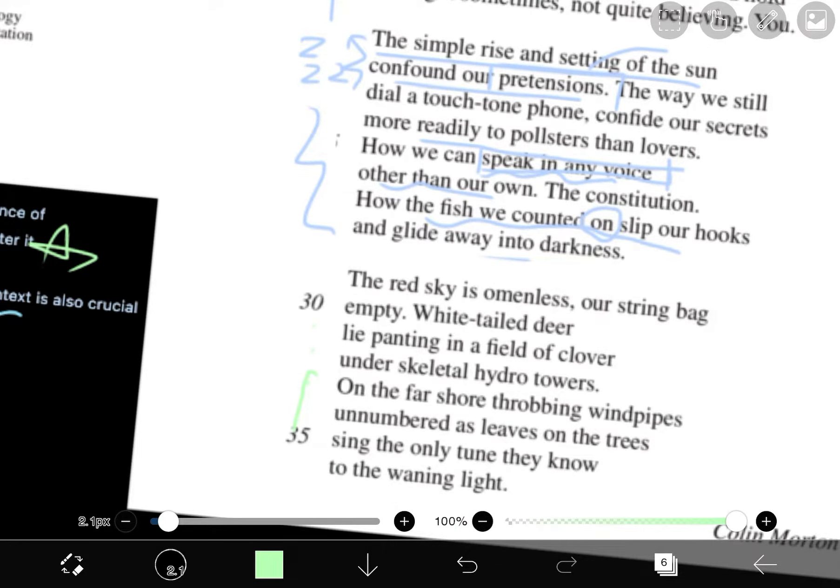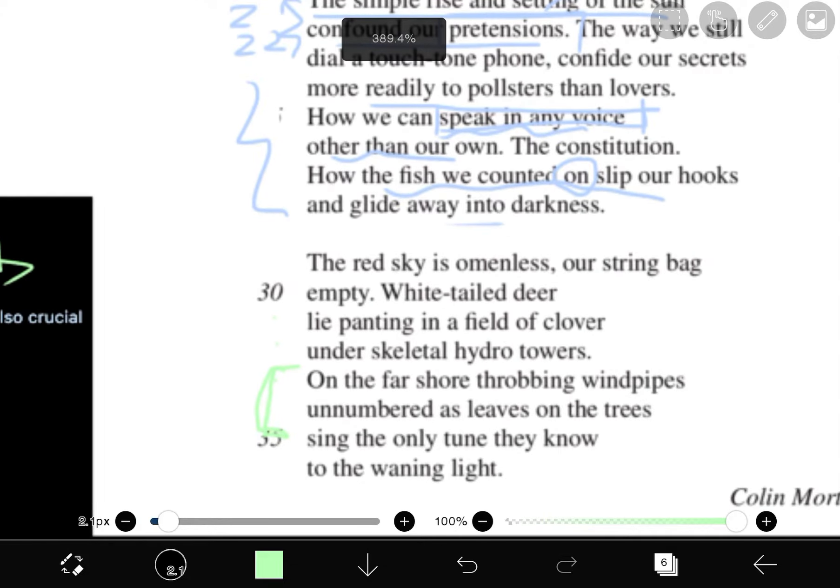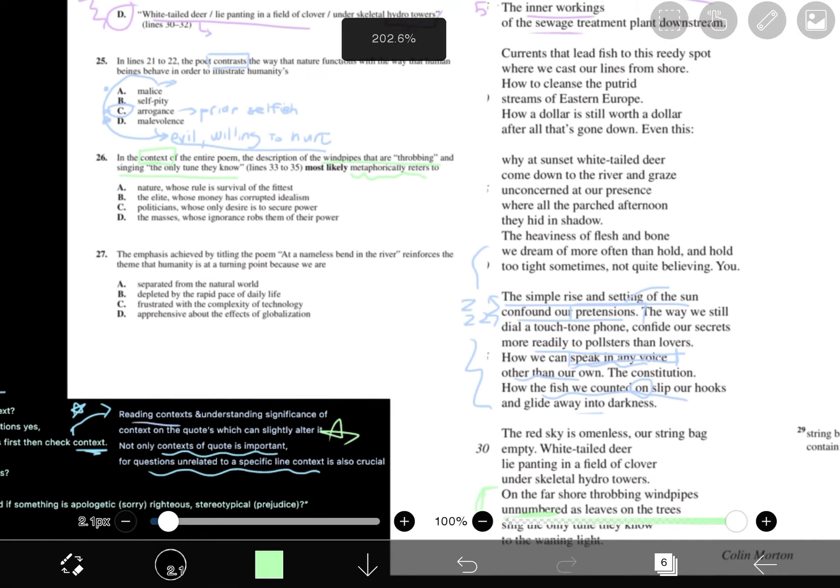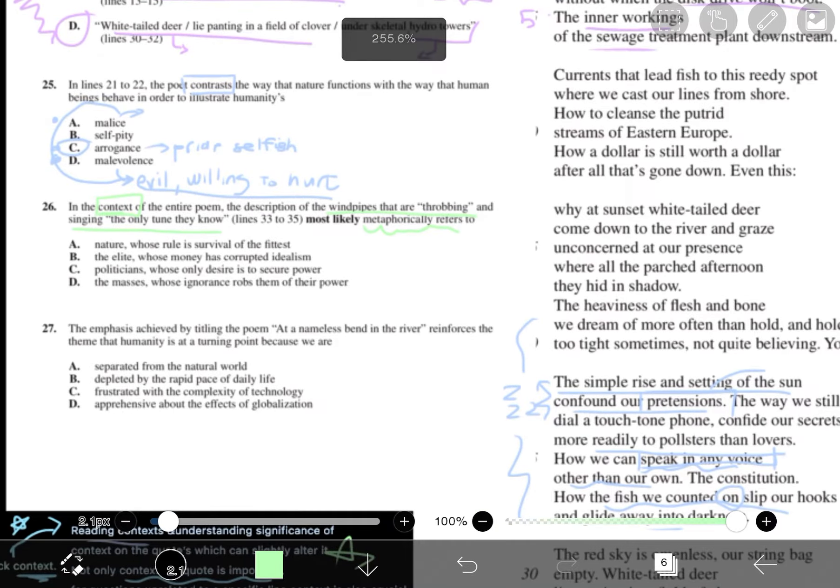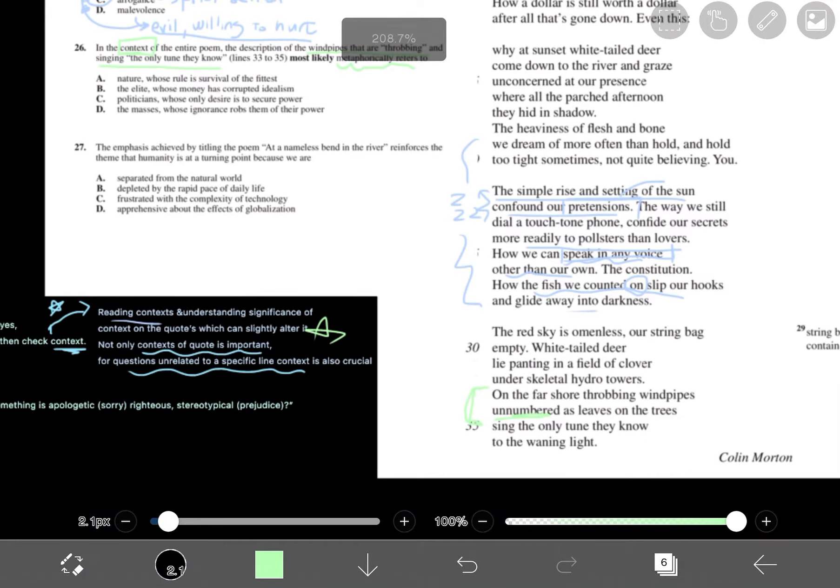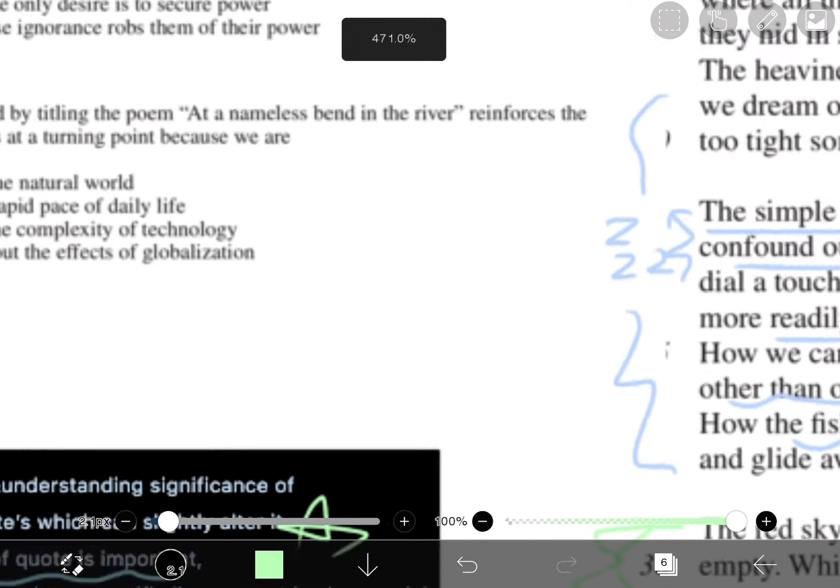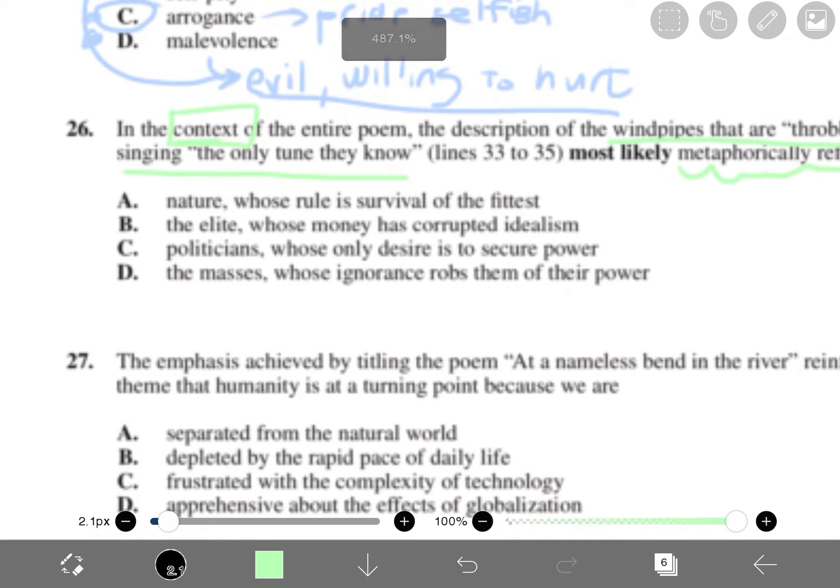Kind of here. On the far shore, throbbing windpipes unnumbered as leaves on the trees sing the only tune they know to the waning light. Let's just say if I read the entire poem and I still don't understand what's going on, I'm just going to go with this little context and all this part. Actually, in this specific context, this part is kind of confusing. But nevertheless, in this little bit, it does give us a very important hint.